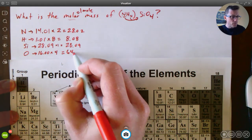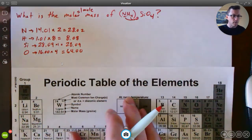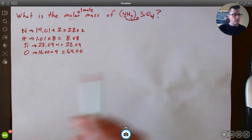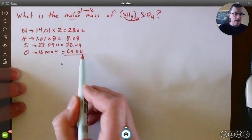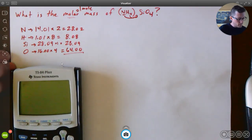Now this is basically telling us the weights of all of our pieces. So now I'm simply going to take the calculator and I need to add them all together. Okay, so I have 28.02 plus 8.08 plus 28.09 plus 64.